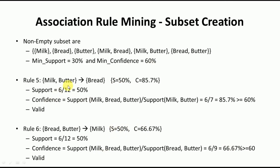For Rule 5, S = milk-butter, the rule is: milk-butter → bread. Support is 50 percent. Milk-butter also appears 7 times, so confidence = 6 divided by 7 = 85.7 percent — a valid rule. For Rule 6, S = bread-butter, the rule is: bread-butter → milk. Support is 50 percent and confidence is 66.67 percent — also valid.